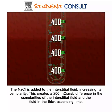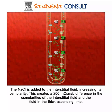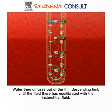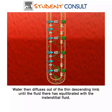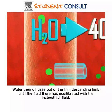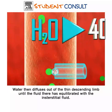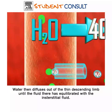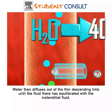This creates an osmolarity difference between the interstitial fluid and the thick ascending limb. Water diffuses out of the thin descending limb until the fluid there has equilibrated with the interstitial fluid.